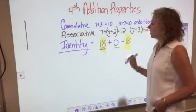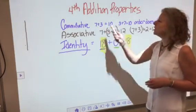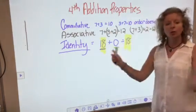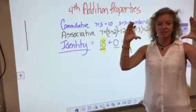When you're thinking about all three of these properties, with the commutative property I want you to think order of addends doesn't matter. With the associative property, I want you to think parentheses and grouping - how you group doesn't matter.